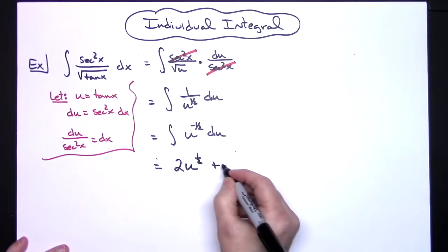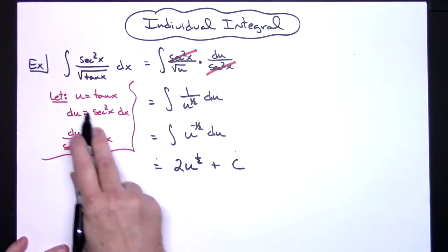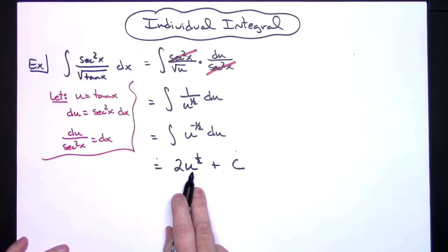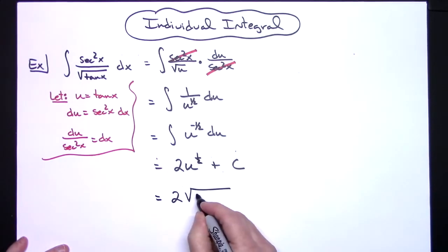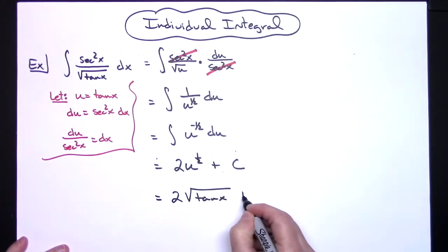We can go ahead and put the plus C at that point, then replace u with what it equals which is tangent x. In the same step we might as well make that back into a radical, so we'll have two square root of tangent x plus C.